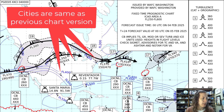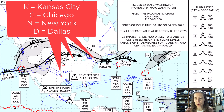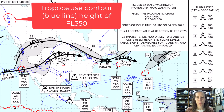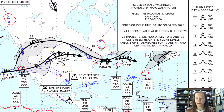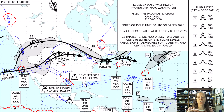Zooming into the chart: the cities labeled in the U.S. are still the same — Kansas City for K, C for Chicago, D for Dallas, and N for New York. The tropopause contours are new — for example, one shows flight level 350, another shows flight level 300, and one over the southern U.S. and the Gulf of Mexico shows flight level 450. These contours show the heights of the tropopause. The individual tropopause height labels from the old chart have been removed.